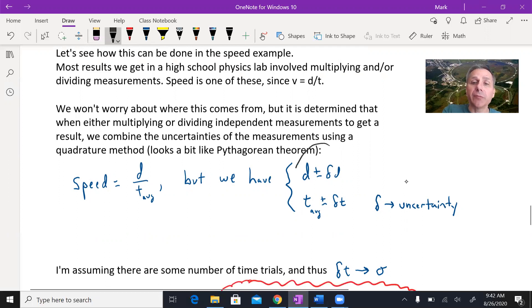If we use some notation for this, what I circled here is d plus or minus delta d, t average minus delta t. It's just assuming that we chose a distance. That's the d. And then there's a plus or minus to it.